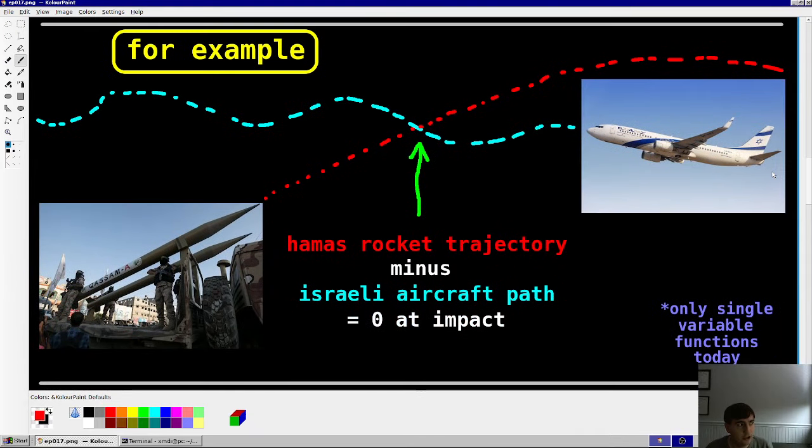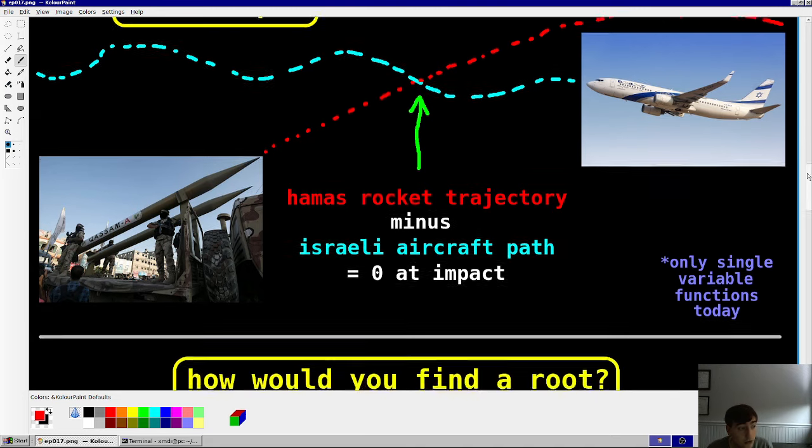So, let's say you're Hamas and you want to shoot a rocket and you have a trajectory plan for that rocket and you also know that there's an Israeli flight path in some certain direction, a passenger flight. Well, you can subtract those two curves and you can find the impact point where that difference is 0. Of course, you have to worry about time. There's three variables for the spatial dimensions. But the principle is the same. Where these curves intersect, that difference between them is 0. So there are uses for this.